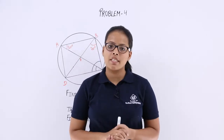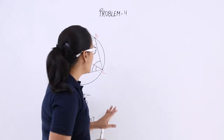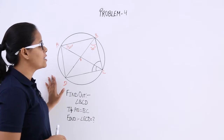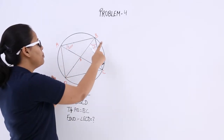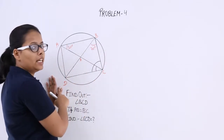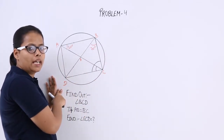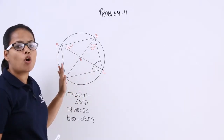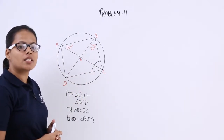Hello guys, let's discuss this problem. In this problem, a circle has been drawn and A, B, C, D is a cyclic quadrilateral because all four points are lying on a circle.